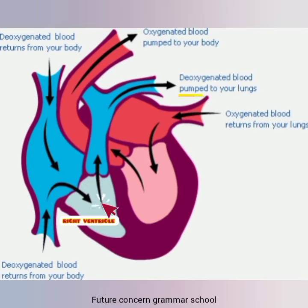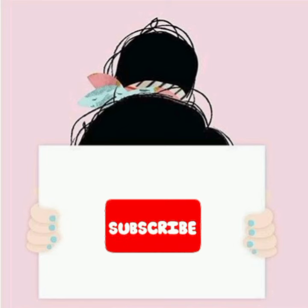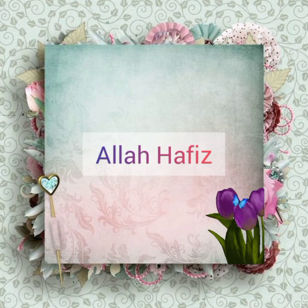Dain ventricle khun ko phephron ki taraf pumps karta hai aur bain ventricle khun ko jisum ki taraf pumps karta hai. If you like this video, please like and subscribe. Thanks for watching. Allah Hafiz.